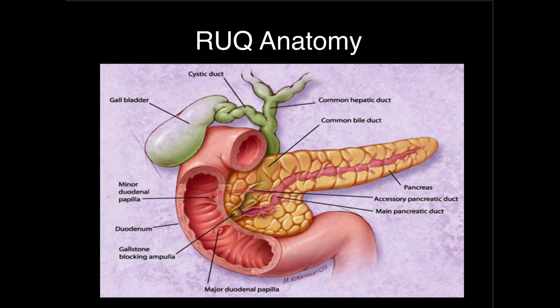As far as right upper quadrant anatomy, there's significant variation in the position, shape, and size of the gallbladder, and it can be different and difficult to find on different patients. So this can be very frustrating. Let's talk a little about the anatomy that we're going to be trying to find and focus on here.